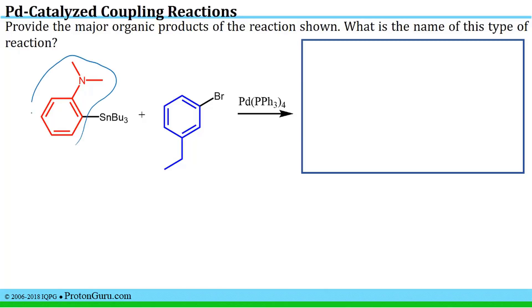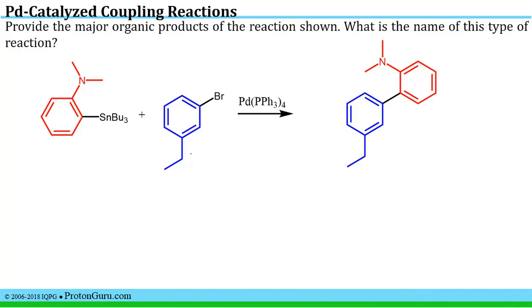If we highlight again the two pieces that will attach to one another, we have this aryl group with the amine ortho to the attachment site, what will become the coupling site. And we have this blue aryl group where the coupling carbon is meta to this ethyl group. That leads us to the conclusion that this would be our product. You've got the coupling where the tin used to be attached, and this site where the bromine used to be attached. A coupling reaction between an organotin and an aryl halide is known as the Stille coupling reaction.